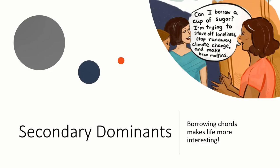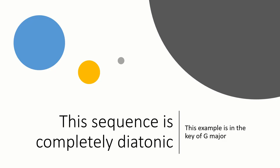Secondary dominance. Borrowing chords makes life more interesting and your composition assignments more complex. This first sequence is completely diatonic to the key of G major. The idea is that you'll sing along in solfège.